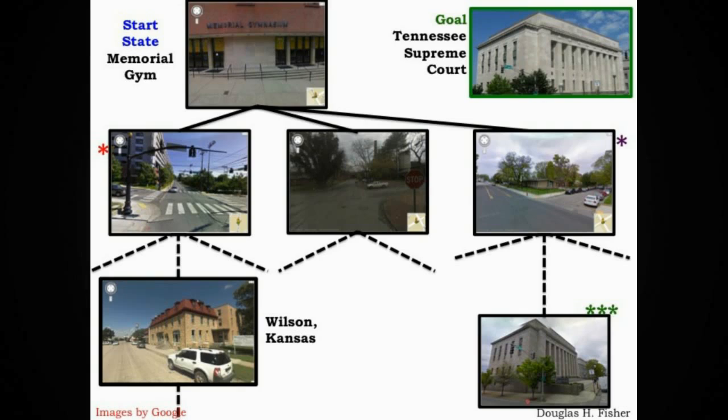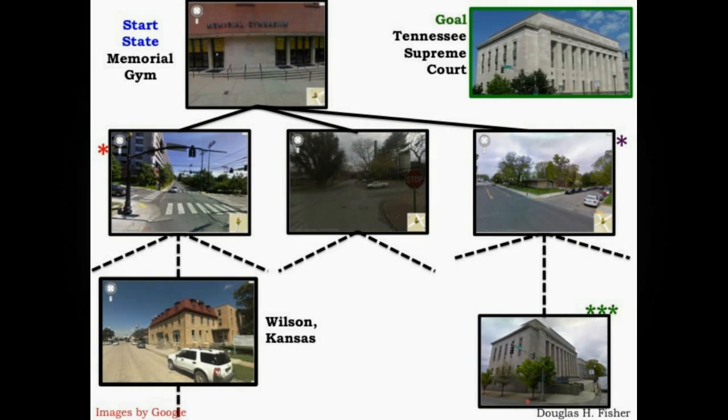Whereas, if we were to eventually get to the right child, we might come upon a path that took us to the Tennessee Supreme Court, shown at the bottom right. We could use the image from Google Street View and match it against the goal image we were given initially. But a blind search algorithm has no information like one would find on a map. A search through Google Street View gives us a much better intuition about the computational complexity that a blind search algorithm is going to face when searching from a start state to a goal state.